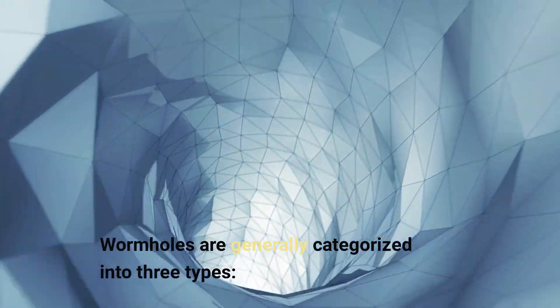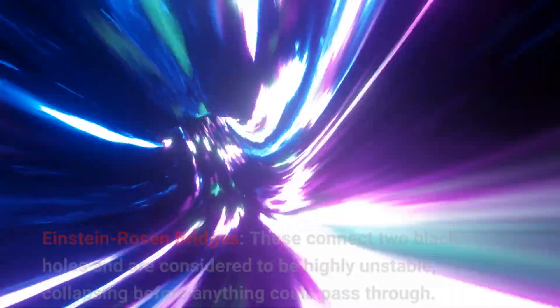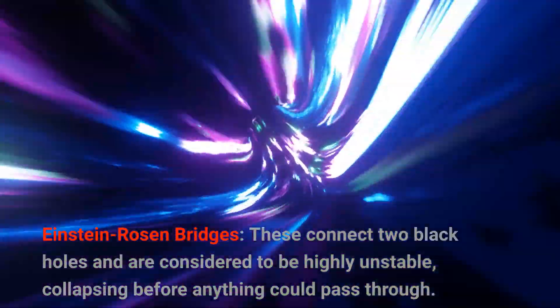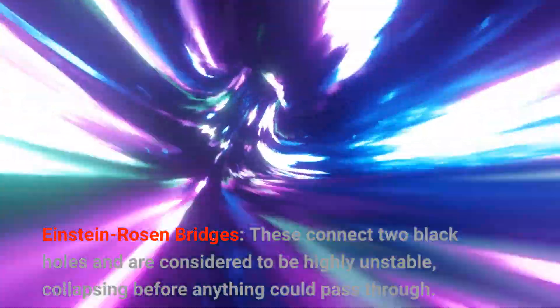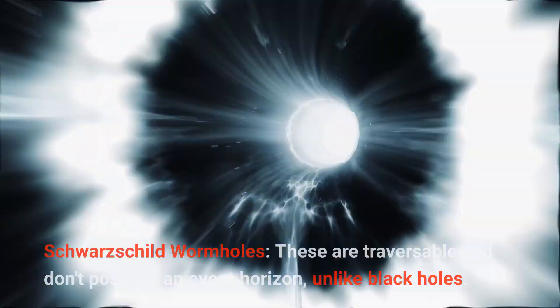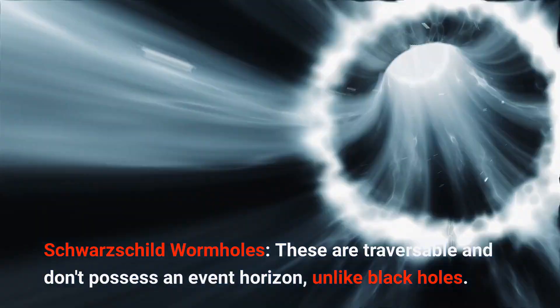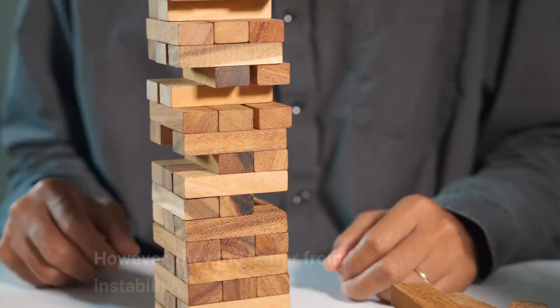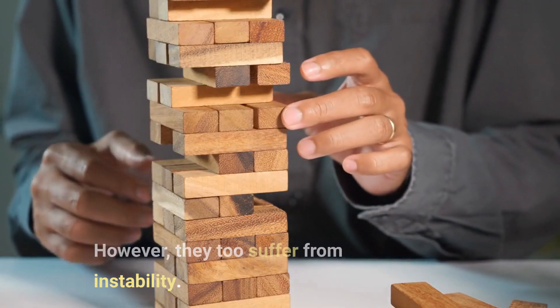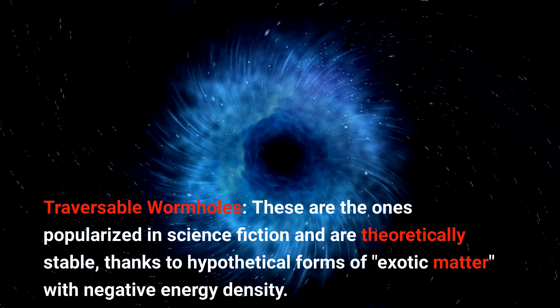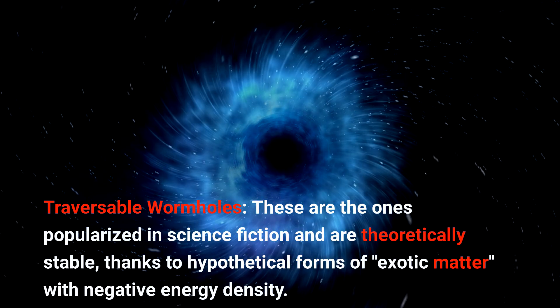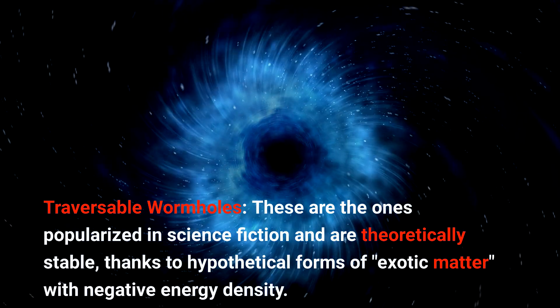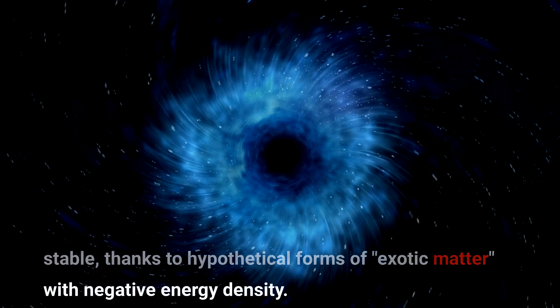Wormholes are generally categorized into three types. Einstein-Rosen bridges connect two black holes and are considered to be highly unstable, collapsing before anything could pass through. Schwarzschild wormholes are traversable and don't possess an event horizon, unlike black holes. However, they too suffer from instability. Traversable wormholes are the ones popularized in science fiction and are theoretically stable, thanks to hypothetical forms of exotic matter with negative energy density.